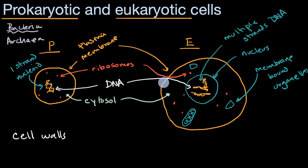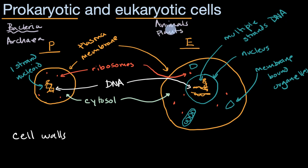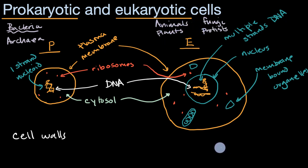What about eukaryotic cells? Here we're talking about animals like our own cells, plants, fungi — think mushrooms — and protists. Hopefully you now see both the similarities and the general differences between prokaryotic and eukaryotic cells.